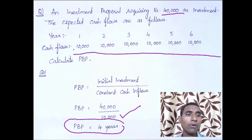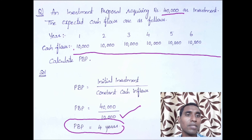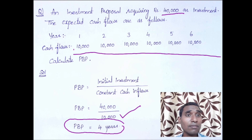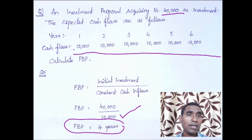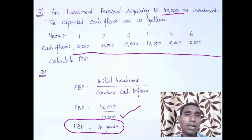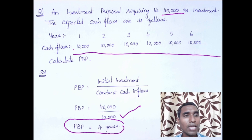The payback period equals four years. The interpretation: if I invest 40,000 in a project with a life of six years, the project takes four years to repay back my 40,000. The payback period answer is always expressed in years. In this problem, only one independent project is given and no company standard is specified, so no accept/reject decision can be made.